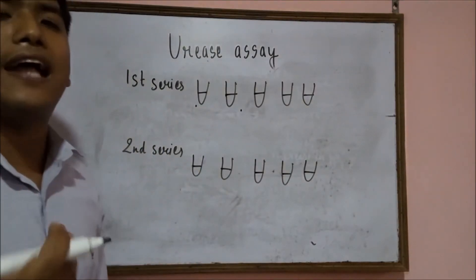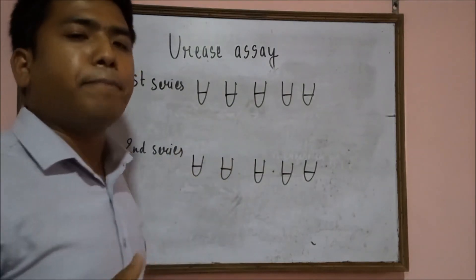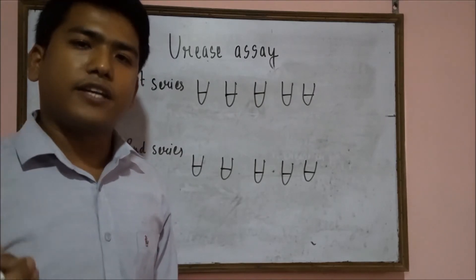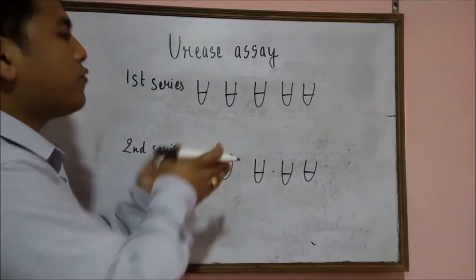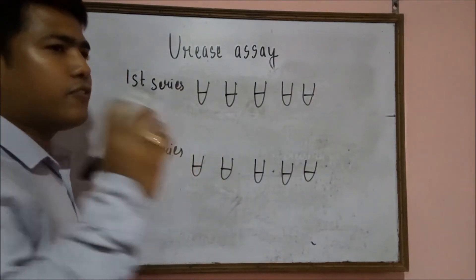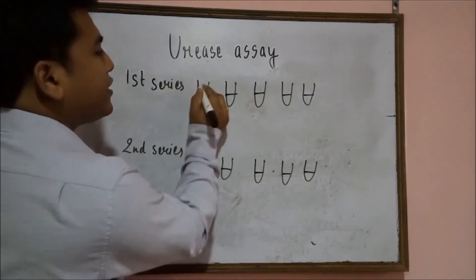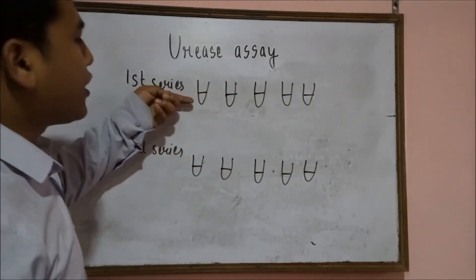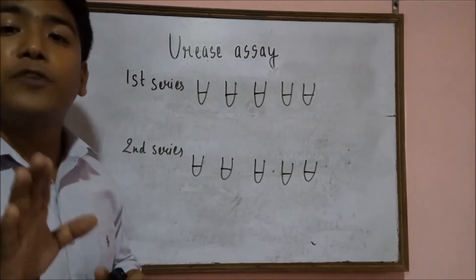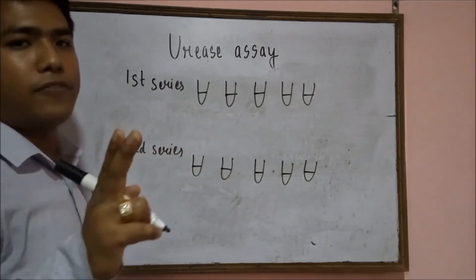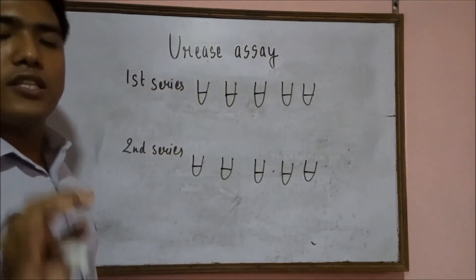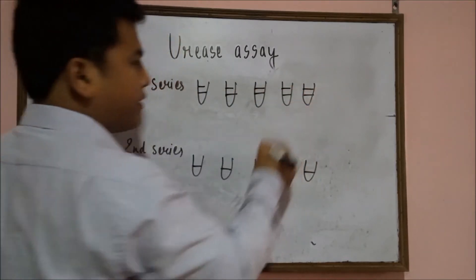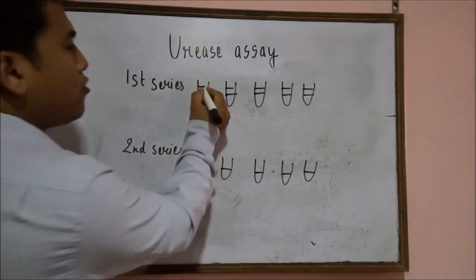After adding the calibrator, you have to add the sample. The sample contains the unknown concentration of the antibiotics — the concentration you are going to determine. In the first series, you add a volume of sample equal to the volume of calibrator. For example, if you are taking 2 ml of calibrator, you also add 2 ml of the sample, which is the test antibiotic. So in the first series, the calibrator volume and the sample volume are equal.